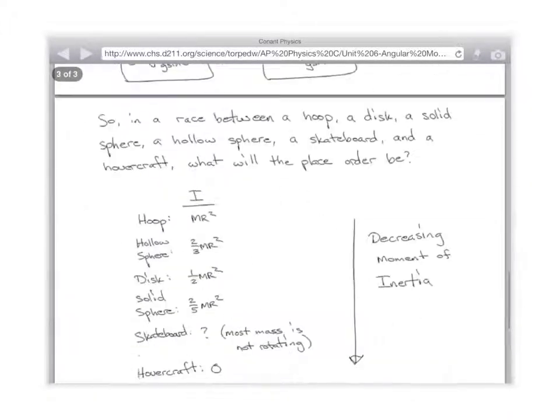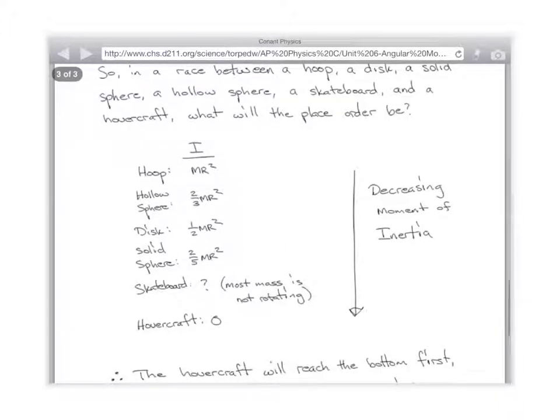Let's go to the end. Race between a hoop, a disc, solid sphere, hollow sphere, skateboard, and hovercraft. What will the place order be? All right. Hoop, hollow sphere, disc, solid sphere, hovercraft, and then skateboard is somewhere in here. Why is skateboard somewhere in here? In between these two? Because it's close to a hovercraft, but it's not exactly. Yeah, it's almost a hovercraft, but it does have a tiny little bit of its mass that has to spin up.